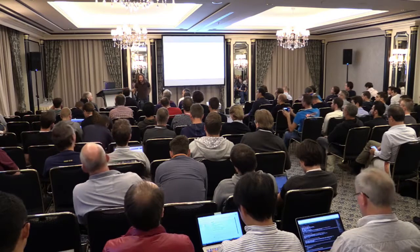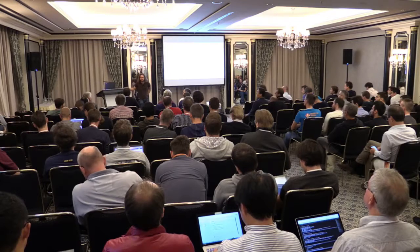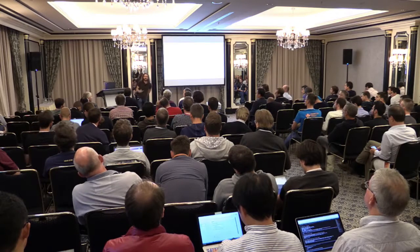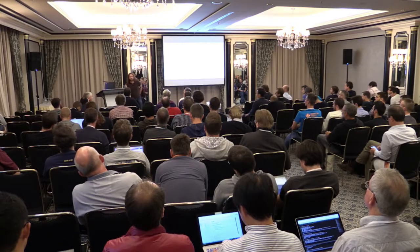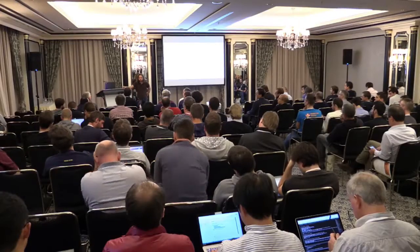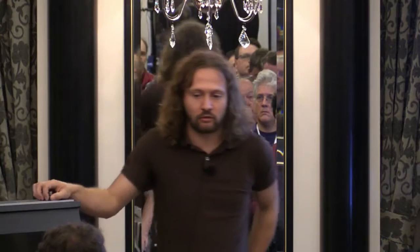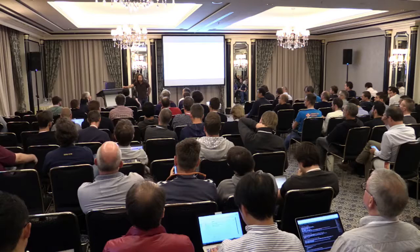An audience member asked about the use of 'armel' (ARM little endian). The speaker explained it's the name Debian uses for this architecture — basically ARM v5 and earlier. It's not used much in current projects but Debian supports it, and when Elbe was started it was a common architecture so they still support it.